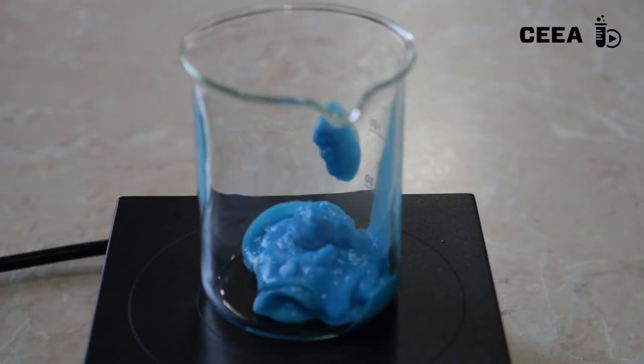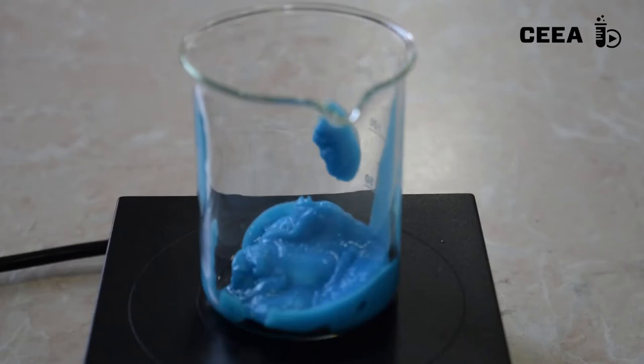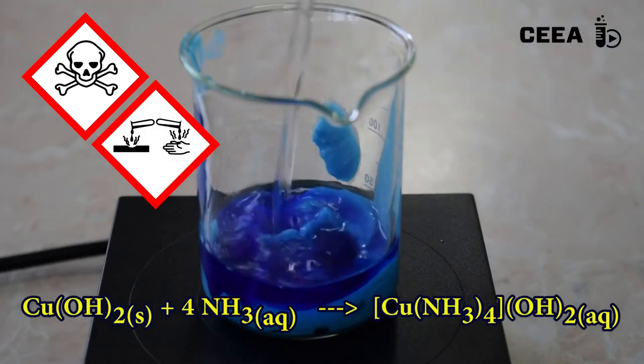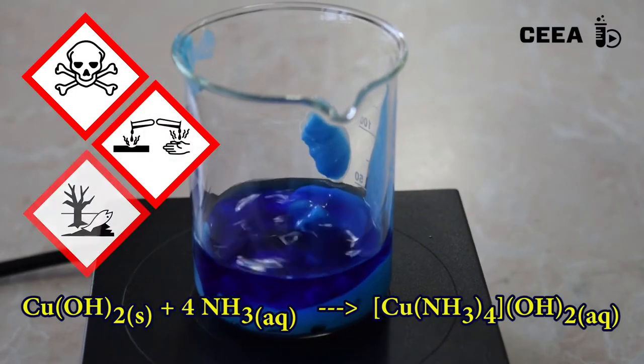Once filtered, place the precipitate in a beaker and add 50 ml of concentrated ammonia until the complete dissolution of the copper hydroxide.